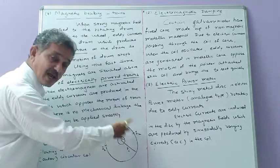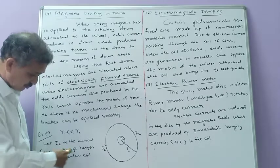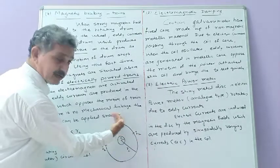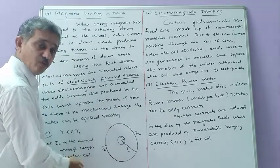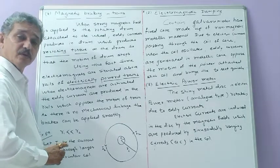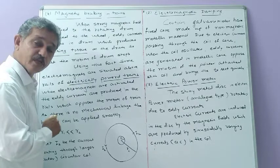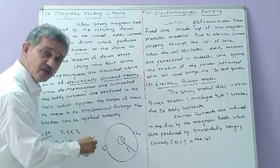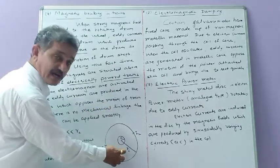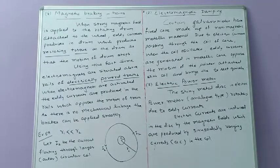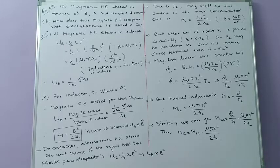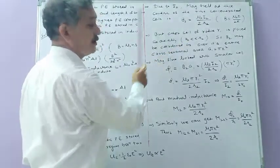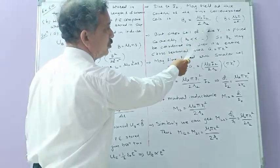Let I2 be the current flowing through the larger outer conducting ring. Due to current I2 flowing through the outer circular coil, the magnetic field at its center comes out perpendicular to the plane. The magnetic field is B2 equal to mu0 times I upon 2R. So the magnetic field B2 equals mu0 times I2 upon 2R2. The magnetic field at the center of a current-carrying circular loop is mu0 I upon 2R, so B2 = mu0 I2 / 2R2.